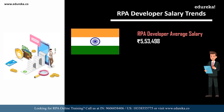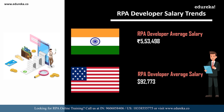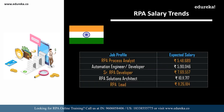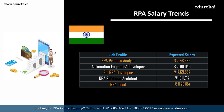According to Indeed.com, on average an RPA developer can expect a salary of 5,53,000 rupees per annum in India and 92,000 dollars in the USA. For other related roles in India: an RPA process analyst can expect around 5,48,000; an automation engineer or automation developer around 5,90,000; a senior RPA developer around 7,69,000; an RPA solutions architect around 10,11,000; and an RPA lead around 11,26,000 per annum.